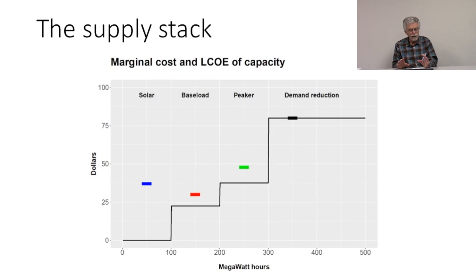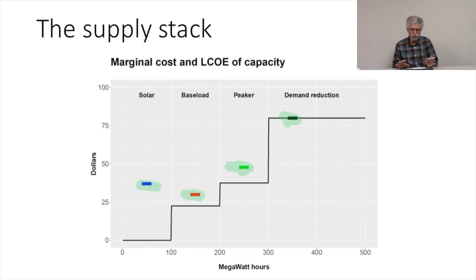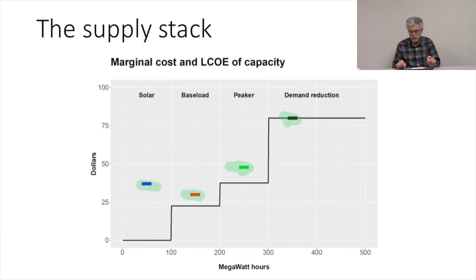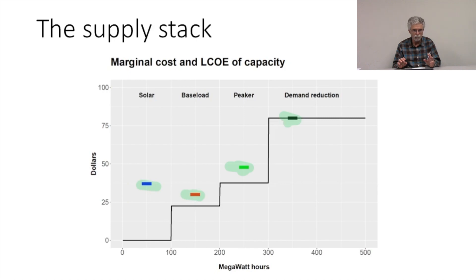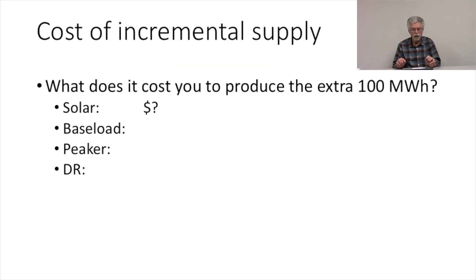What I've done is I've gone back and listed my four sources and reordered them. Solar is first — it has a higher levelized cost of energy than baseload — then comes peaker, and then comes demand reduction. But I've ordered them in terms of their marginal cost for each of the 100 megawatt hours. So which of these plants are going to make us the most money? For a given price, which of these plants is going to make us more money? Let's go through the cost to you of incremental supply.